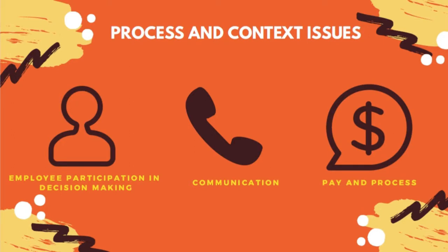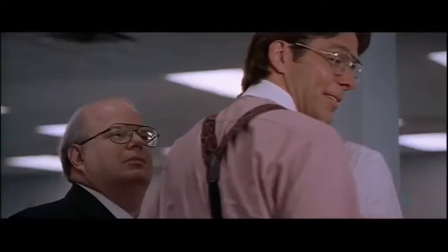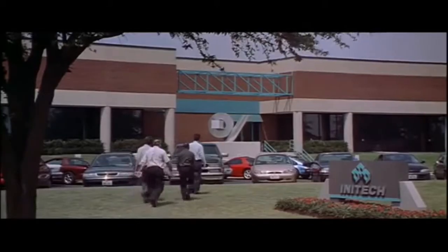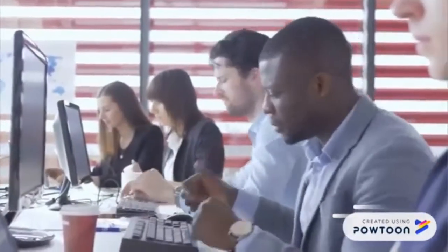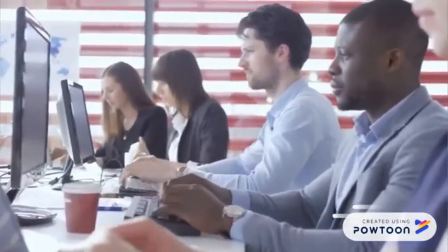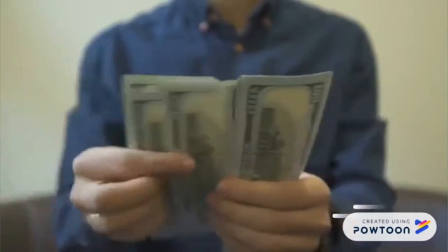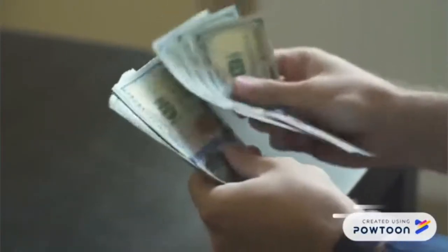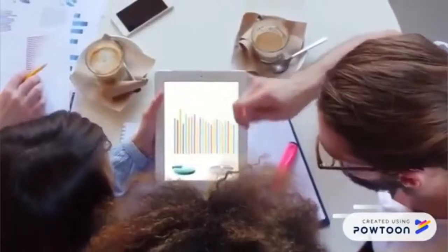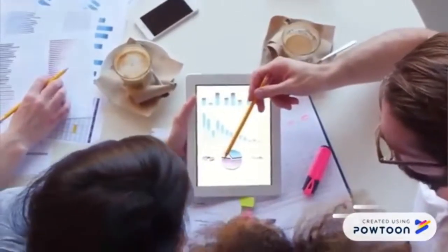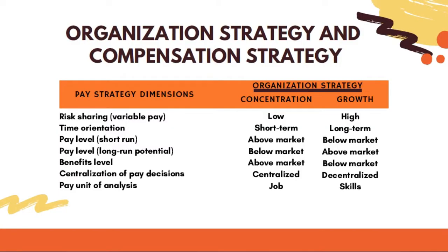Communication: in making any changes, it is crucial to determine how best to communicate reasons for the changes to employees. Most pay-related communications come through individual discussions with one's supervisor, still ahead of the company website, email, and discussions with the human resource department. Pay and process: treating process issues such as participation as factors that may facilitate the success of pay programs. A study reported that productivity and profitability were both enhanced by the addition of employee participation in decisions, whether the organization follows a growth strategy or a concentration strategy.